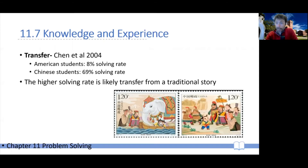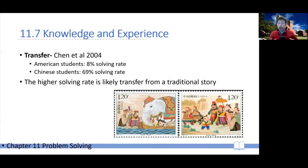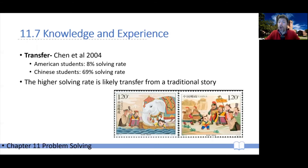This is why it's relevant to transfer: the Cao Chong story is fairly well-known in Chinese folklore, so Chinese students had this story in their repertoire — knowledge they could draw from and apply transfer in order to solve the new problem. On the other hand, this story is not part of American folklore, and there is no corresponding story that could be drawn upon to enable transfer and solve the problem. This explains the large cross-cultural difference between American and Chinese students — a wonderful example of how transfer operates.